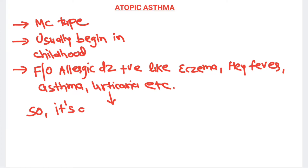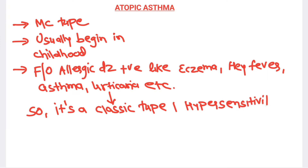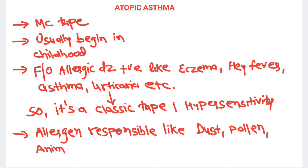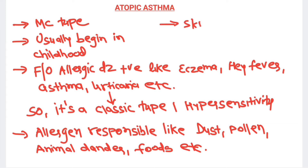Atopic asthma is a classic type 1 hypersensitivity reaction. As it is allergic asthma, the allergen is responsible for inducing the asthma and causing bronchoconstriction. The allergens responsible for atopic asthma include dust, pollen, animal danders, and certain types of foods. All these lead to atopic or extrinsic asthma. In atopic asthma, the skin allergy test is positive.